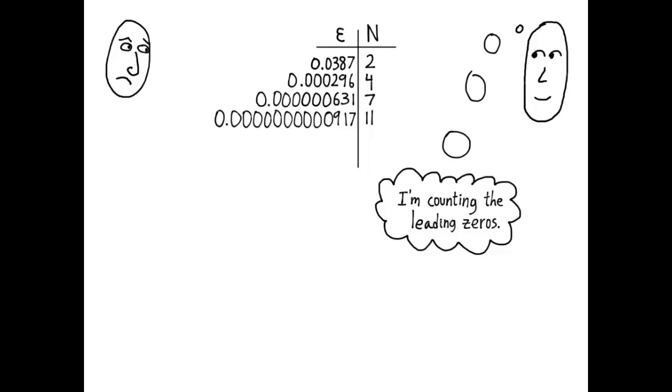Can you come up with an algebraic expression that lets you write N as a function of epsilon? Pause the video for a little while now and see if you can write N as a function of epsilon. Here's one way of writing N as a function of epsilon. N of epsilon equals negative floor of log of epsilon. And this is the common log, the logarithm base 10. Okay, stop and figure out why that works if you don't understand it.